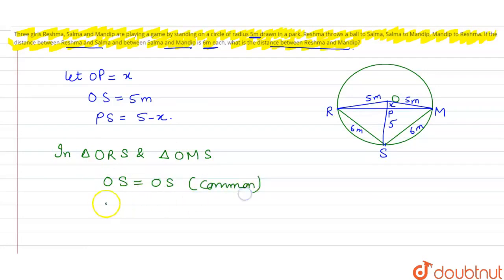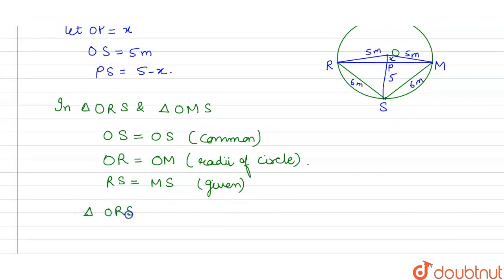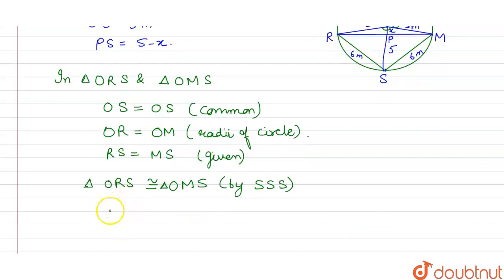OS is equal to OS. OR is equal to OM — radii of circle हैं। और RS और MS will be equal because both हमें 6 meter given हैं। तो यानि के ये दोनों triangles congruent हो गए — triangle ORS congruent to triangle OMS by SSS। तो अगर ये दोनों triangles congruent हैं, तो ये दोनों angles equal हो जाएंगे because they are corresponding parts of congruent triangles। तो angle ROS equals angle MOS by CPCT।